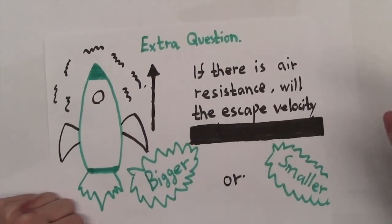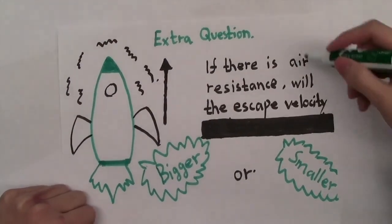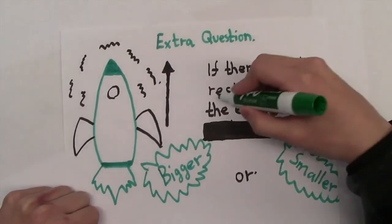Given the knowledge you have learned in this lesson, here is an extra question for you. Suppose there is air resistance in the Earth's atmosphere, will the escape velocity be bigger or smaller?